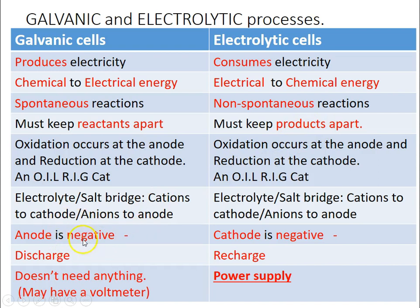The anode is negative in galvanic because you're forcing the reaction to go in the opposite direction in electrolytic — batteries have to be recharged and you can't remove the negative label from the anode. When forcing electrons back into the anode it would be undergoing reduction, making it the cathode, which is negative. You need to know discharge and recharge. Critically, oxidation always occurs at the anode and reduction always occurs at the cathode for both galvanic and electrolytic — this never changes.